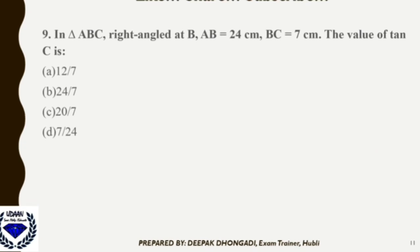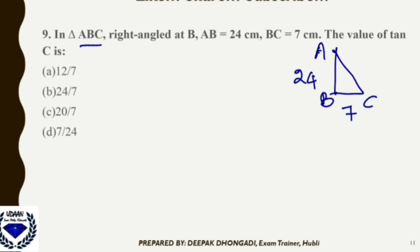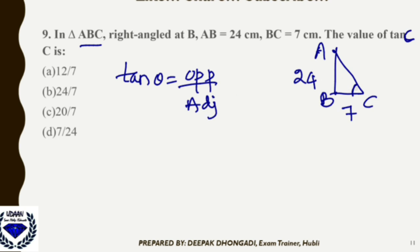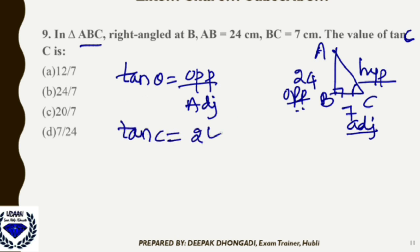Question 9: In right triangle ABC, AB = 24 and BC = 7. Find tan C. Using tan θ = opposite/adjacent, for angle C the opposite side is AB = 24 and the adjacent side is BC = 7. So tan C = 24/7, and the correct option is B.